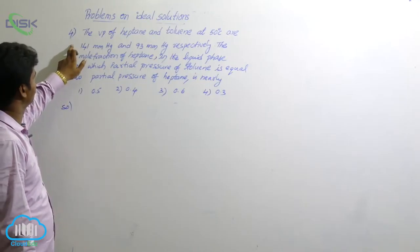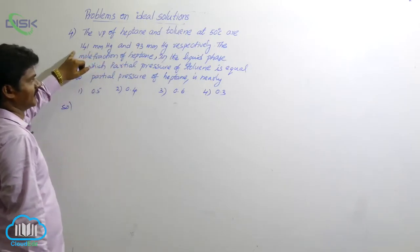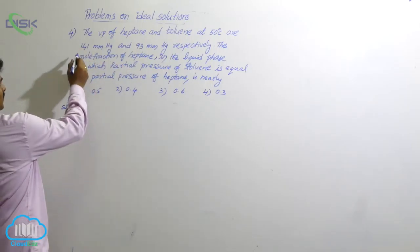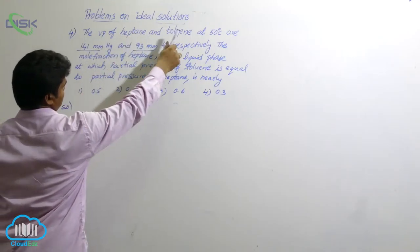Let us see the fourth problem. Here, vapor pressure of heptane and toluene, at least divisible in domain. 141 mmHg is of heptane, 93 mmHg is of toluene.